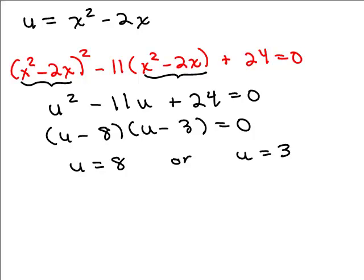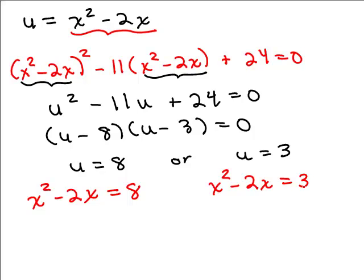Now remember we're trying to solve for x. We have to think of the original problem which is in red up here. So now I have to replace u with what it really stands for. Right? u really stands for x²-2x. So I'm going to replace the u with x²-2x equals 8, or replace it over here: x²-2x=3. And now I'm going to solve for x.